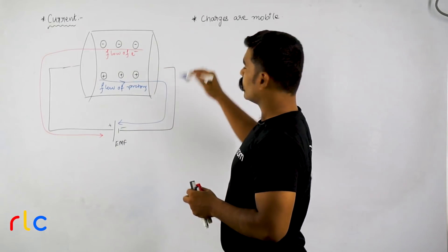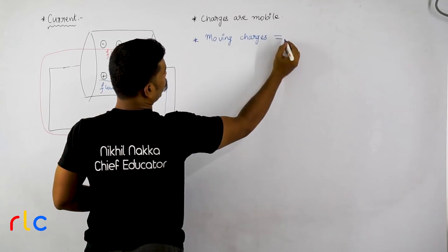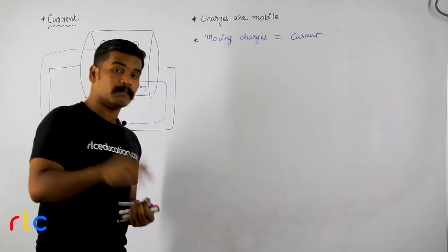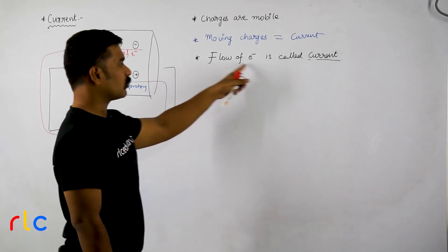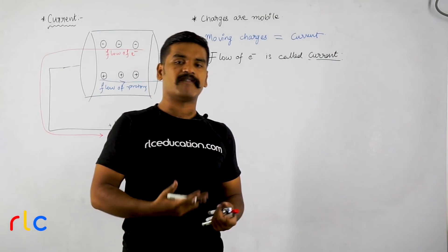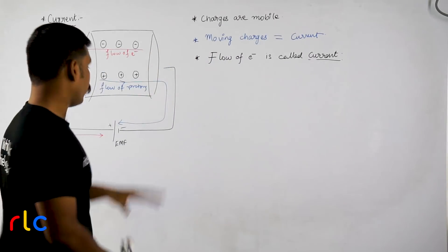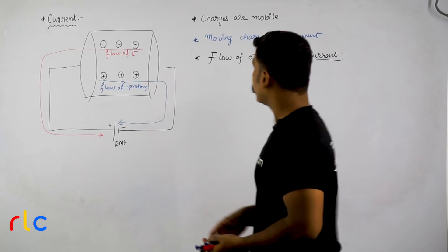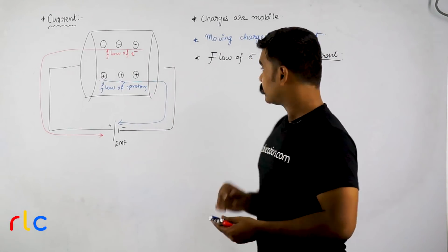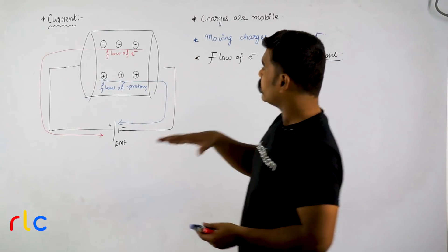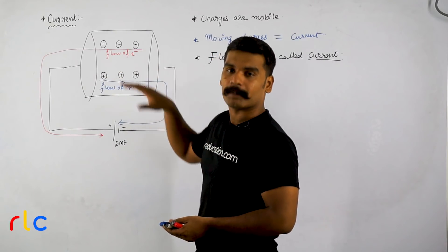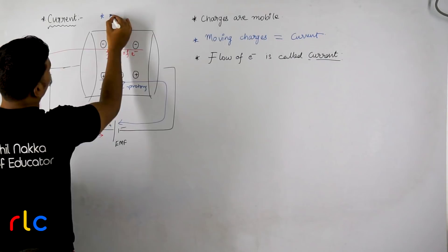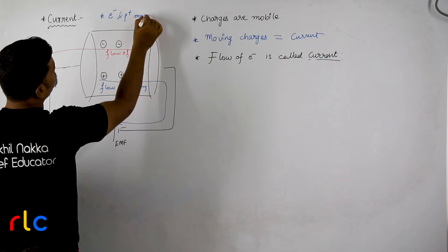By applying EMF, charges started moving. So, moving charges — or simply the flow of charges in a conductor — is called current. To be more precise, we define current as the flow of electrons. But actually, both electrons and protons are moving under the influence of EMF. However, they move in opposite directions — negative charges flow one way, positive charges flow the other.